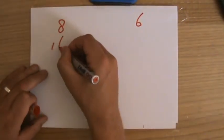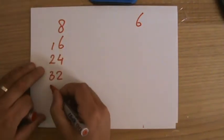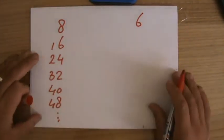8, 16, 24, 8 times 4 is 32, 40, 48, well there are a few more of course.